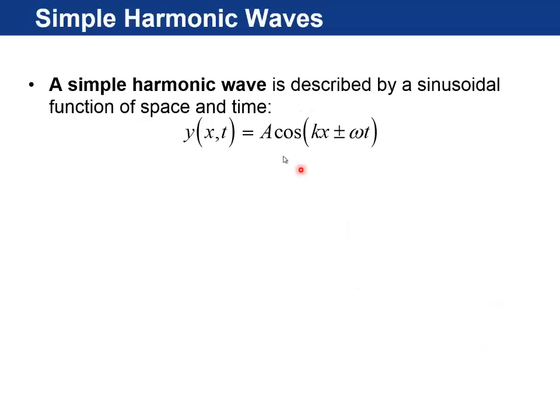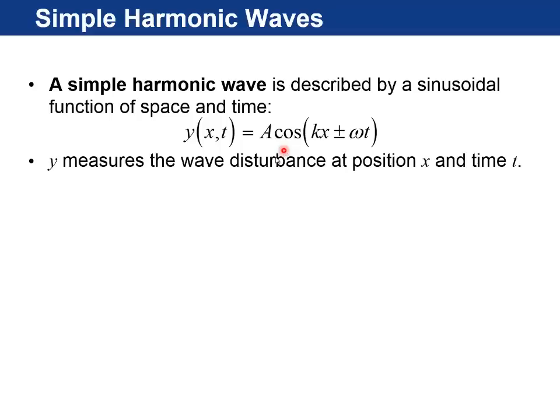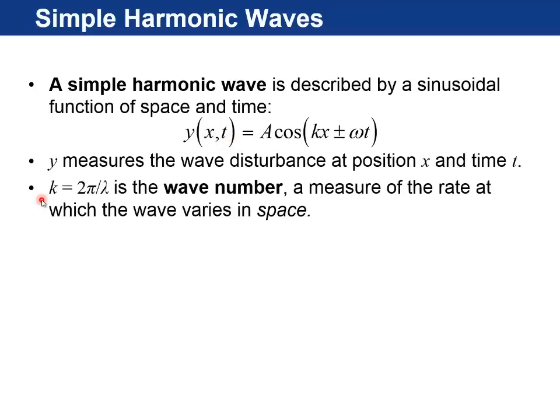If it's a sinusoidal wave, also called a simple harmonic wave, then this is the equation for it. y equals A cosine kx plus or minus omega T. So y is measuring the disturbance at a position x and T, so it's a function of x and time. k is called the wave number. It's a new thing. It's 2π divided by lambda. So it's measured in radians per meter, and it's a measure of the rate at which the wave varies in space. It's sometimes called a spatial frequency. We will call it the wave number.